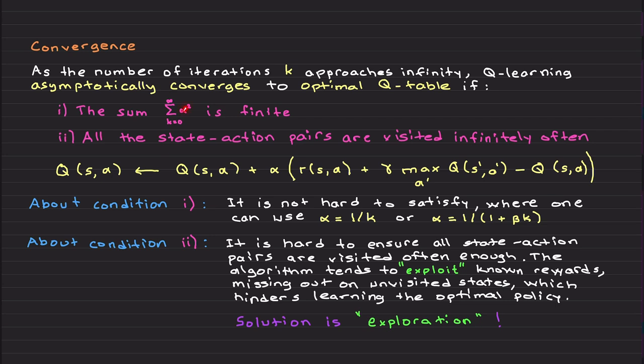This Q learning update law has asymptotic convergence. Basically, as the number of iterations getting larger and larger, Q learning asymptotically converges to the optimal Q table if we have two conditions. First one, from K equals zero to infinity, this series alpha to the power of two, your learning rate, the sum needs to be finite.